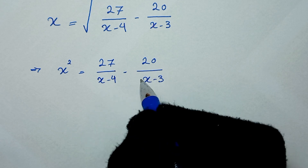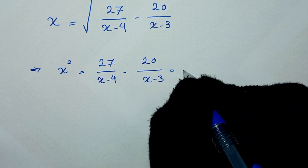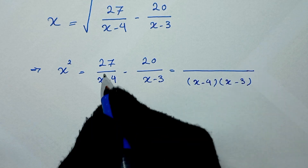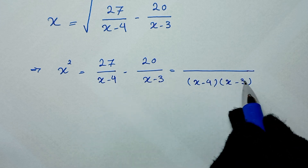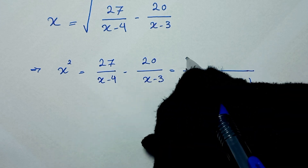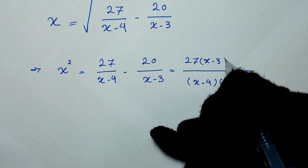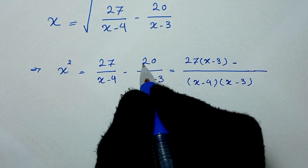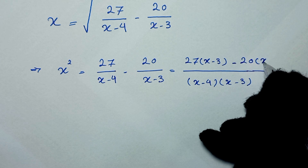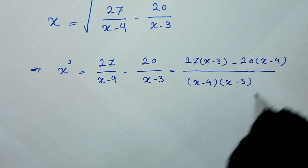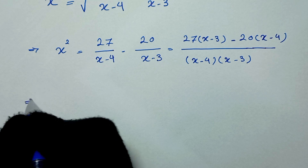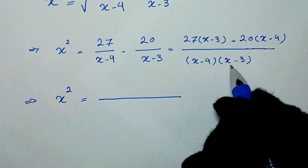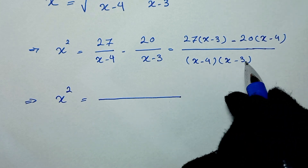Here we take a common denominator for these two fractions, which will be x minus 4 times x minus 3. For the first fraction we multiply numerator and denominator by x minus 3, so it becomes 27 times x minus 3. For the second fraction we multiply by x minus 4.